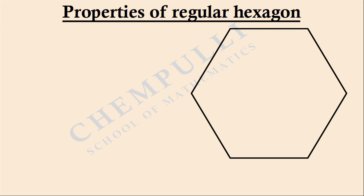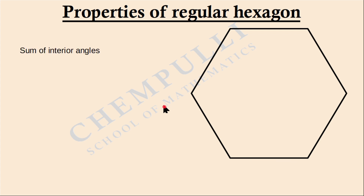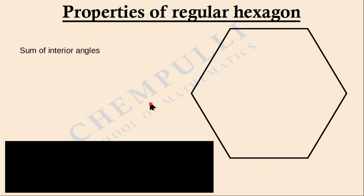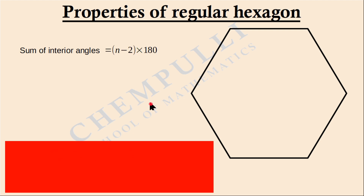First, we will check the angles — the sum of interior angles of this regular hexagon. The formula to find the sum of interior angles of a polygon is (n − 2) × 180.